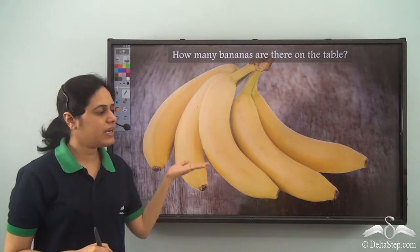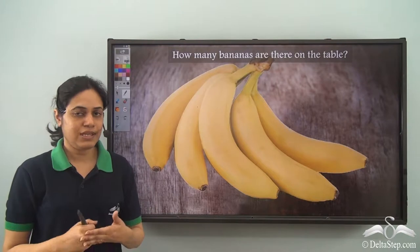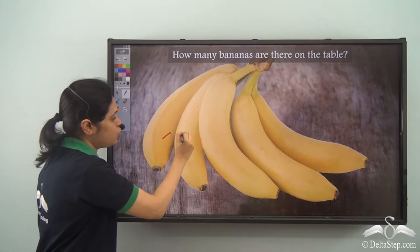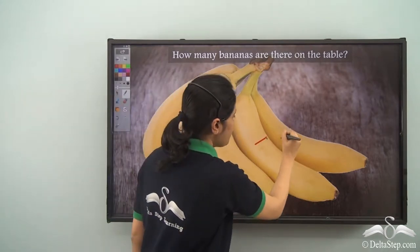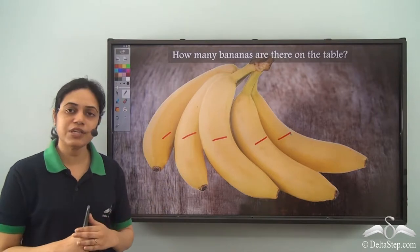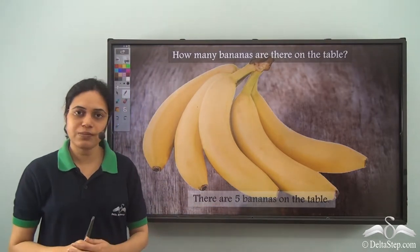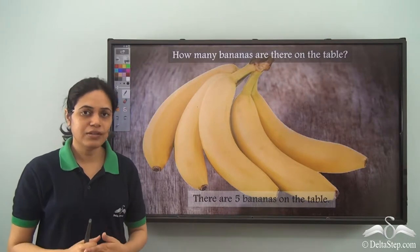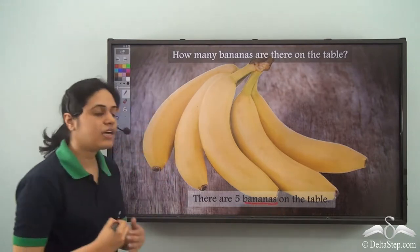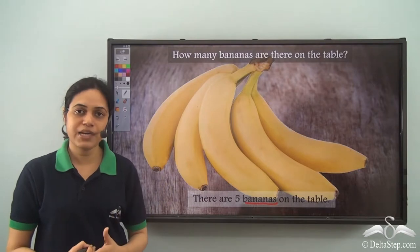Now, how many bananas are here? Is banana a countable noun? We have one, two, three, four, five bananas and we are able to count them using numbers. So, I can say that there are five bananas on the table. Is banana a countable noun? Yes, banana is a countable noun because we can count the number of bananas.